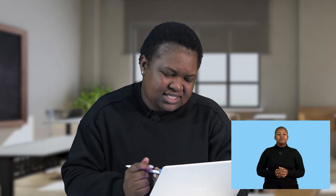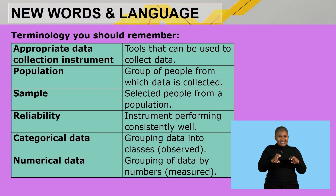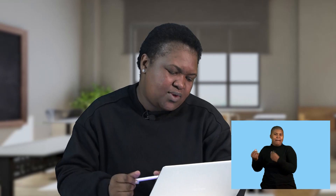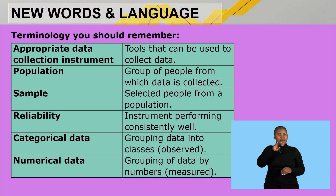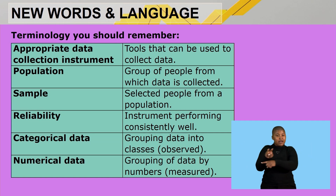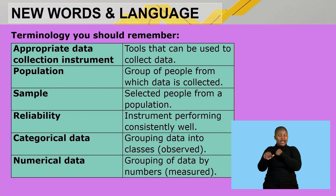Reliability means the instrument performs consistently well, giving the same results for every participant in the research. Categorical data is the grouping of data into classes and it can be observed. Lastly, numerical data is the grouping of data by numbers, and it can be measured.